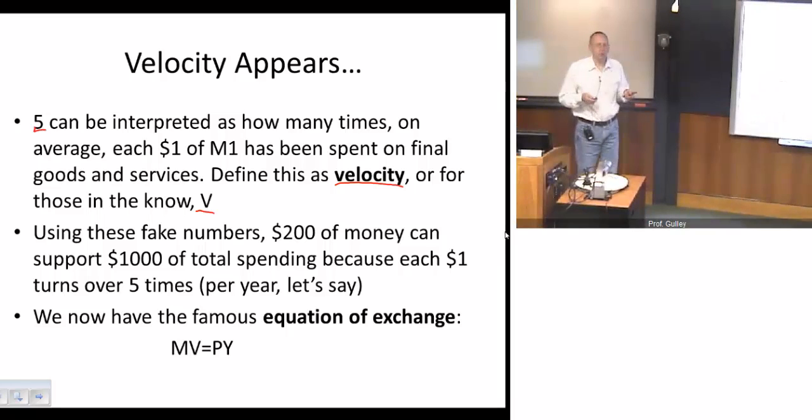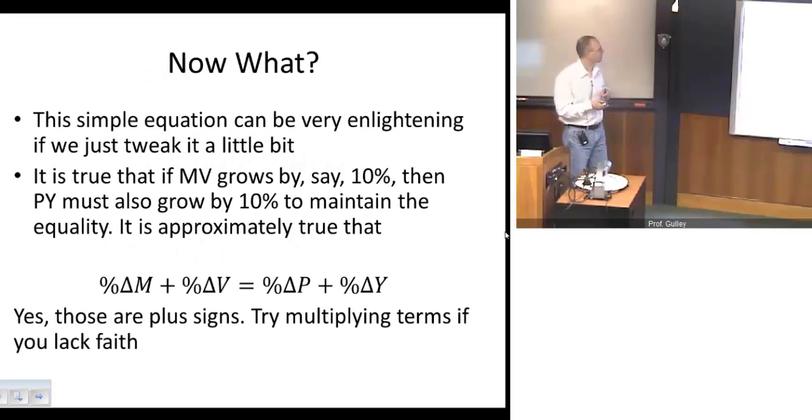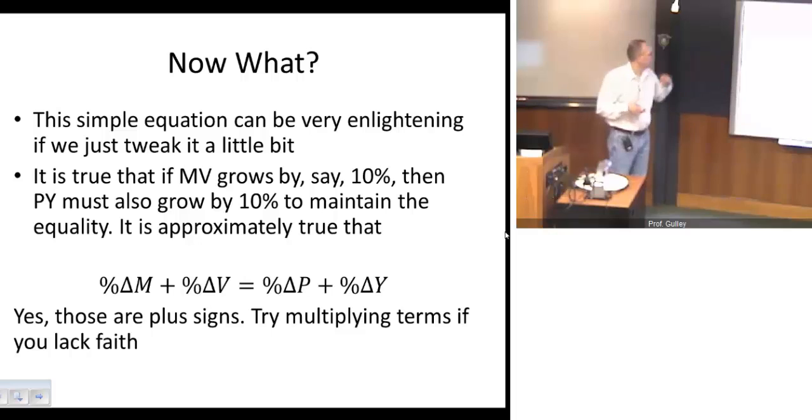So that's how we were able to support $1,000 of total spending with only $200 of spendable money. Each of those dollars was spent five times on average. And let's call the number of times each dollar gets spent velocity, or we'll cleverly label that by capital V. And so now we can arrive at the very famous equation of exchange. MV is equal to PY. So the right side of that equation is just nominal GDP, price level times real GDP. The left side of the equation is just the money supply multiplied by the velocity. And those two things have to be equal to each other.